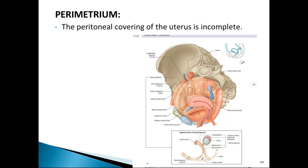The uterus has three layers: perimetrium, myometrium, and endometrium. The perimetrium is the peritoneal covering, which is incomplete — anteriorly the lower part of the uterus and cervix are not covered by peritoneum, and the peritoneum is directly placed on the bladder. This anterior peritoneal reflection is called the vesicouterine pouch, which becomes a loose fold at term allowing the UV fold to be opened for lower segment cesarean section.